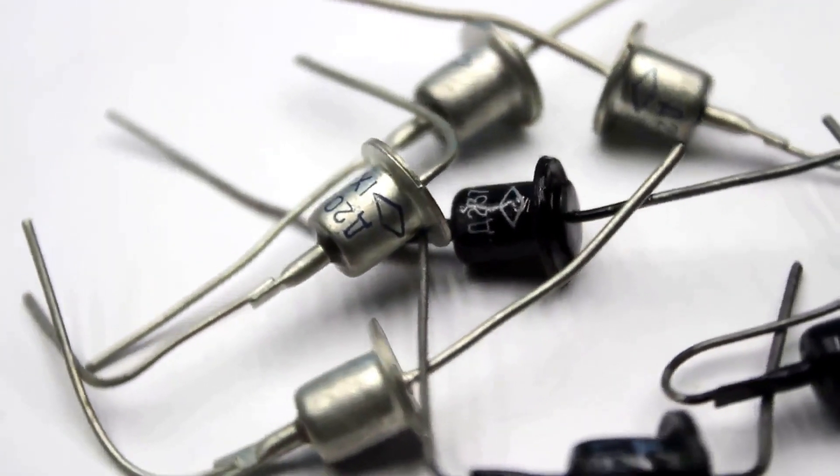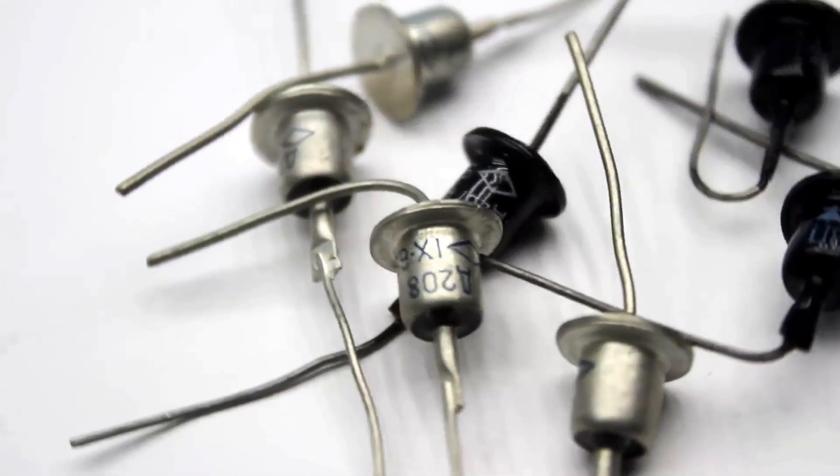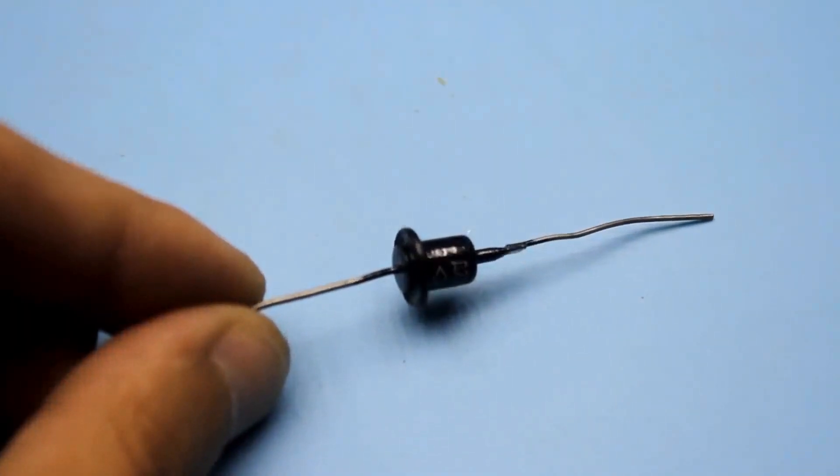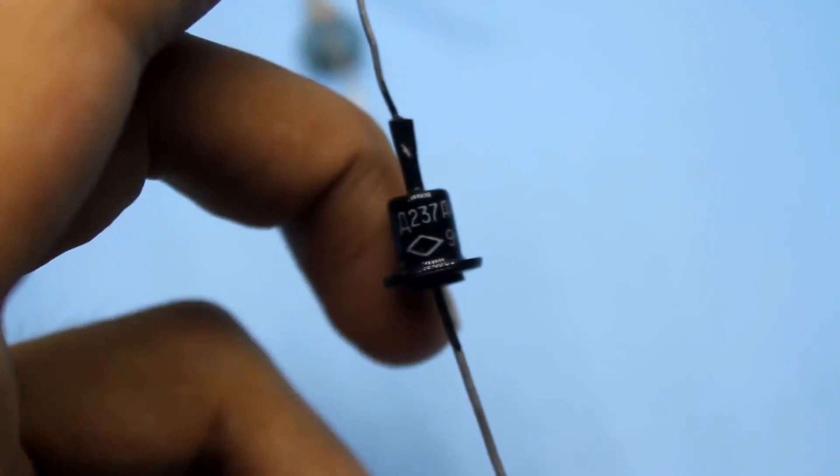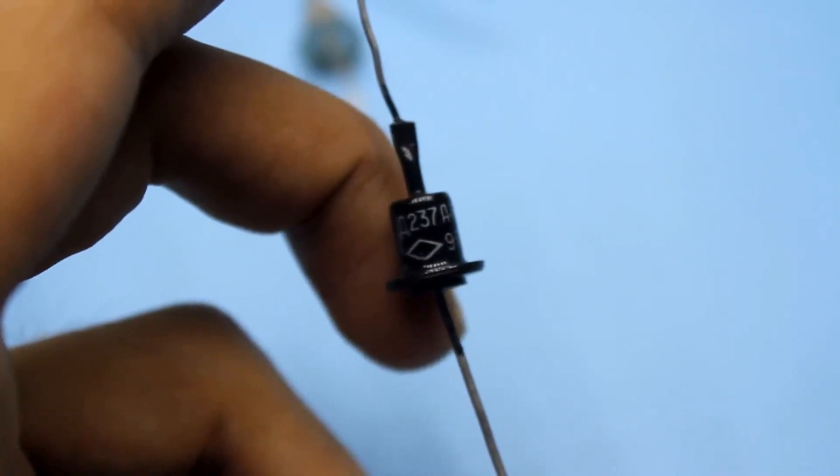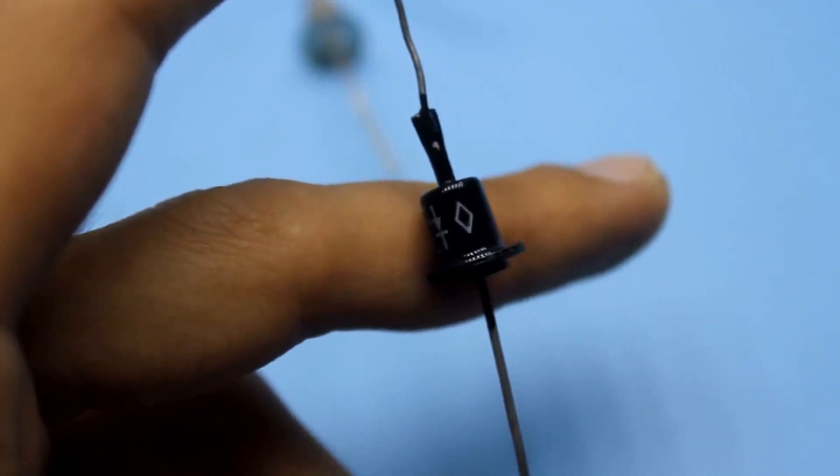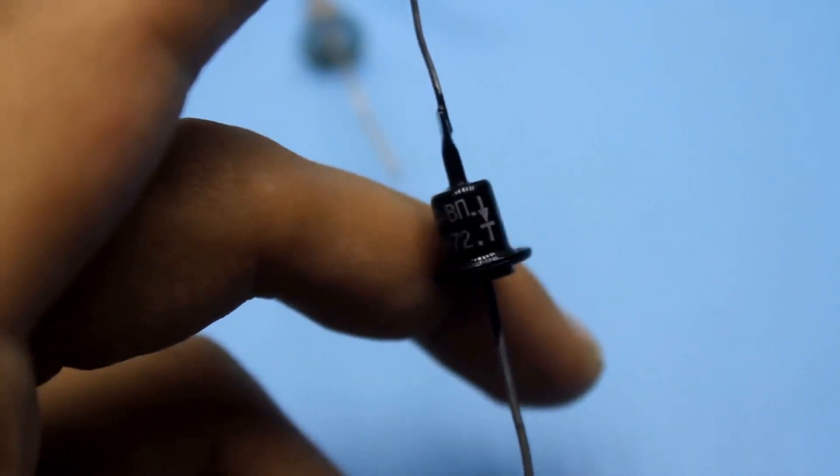There were other diodes in this form factor as well. The parameters did not differ much from the D226. But there were exceptions. For example, the D237D diode. The markings DP and RUMB on the diode casing indicate that it is military grade.